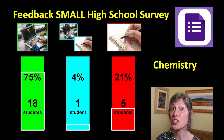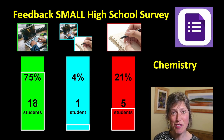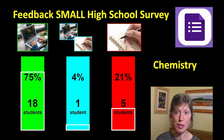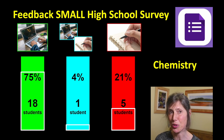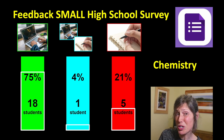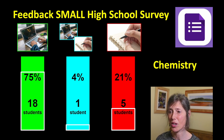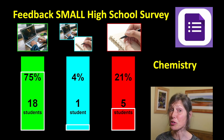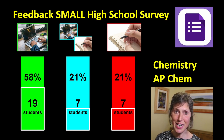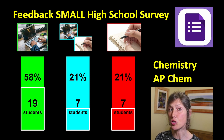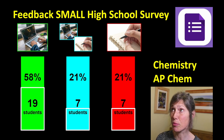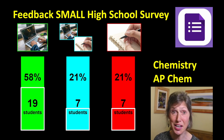I wouldn't be a science teacher if I didn't share some quantitative data. I have 24 students in my two chemistry classes. 75% of them simply loved Google Keep or a digital note-taking system. 4% — that would be one student — thought it would be best to balance between digital and paper note-taking. And five students out of the 24, that would be 21%, absolutely did not like Google Keep. I then added my nine AP chemistry students, making 33 students total.